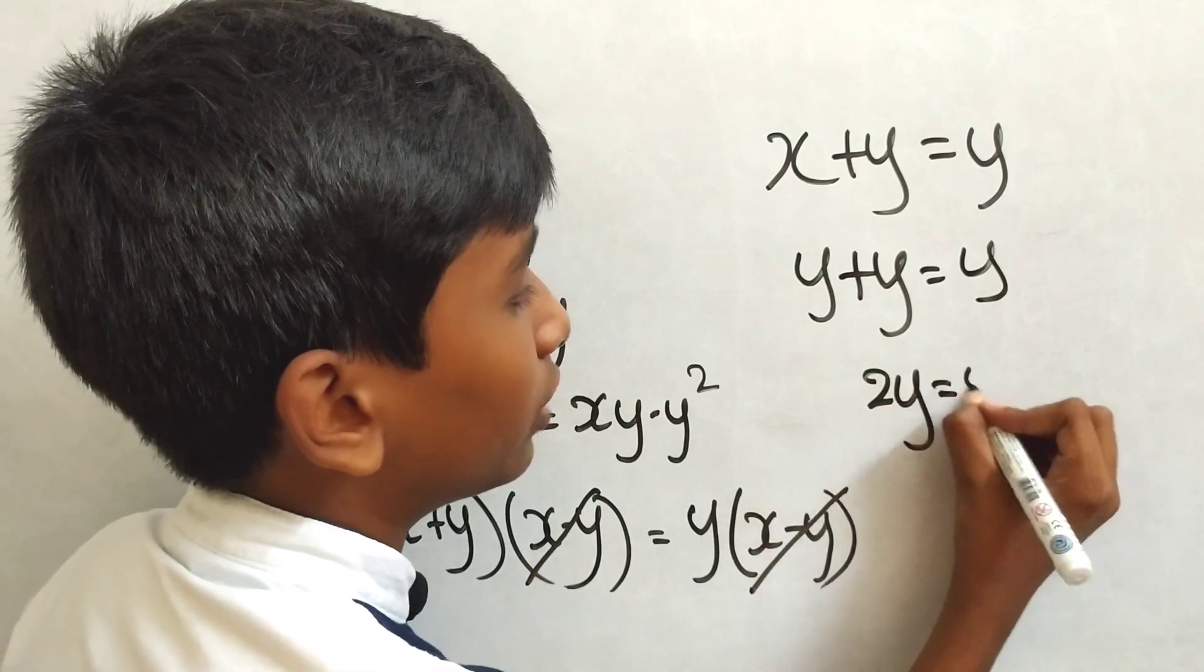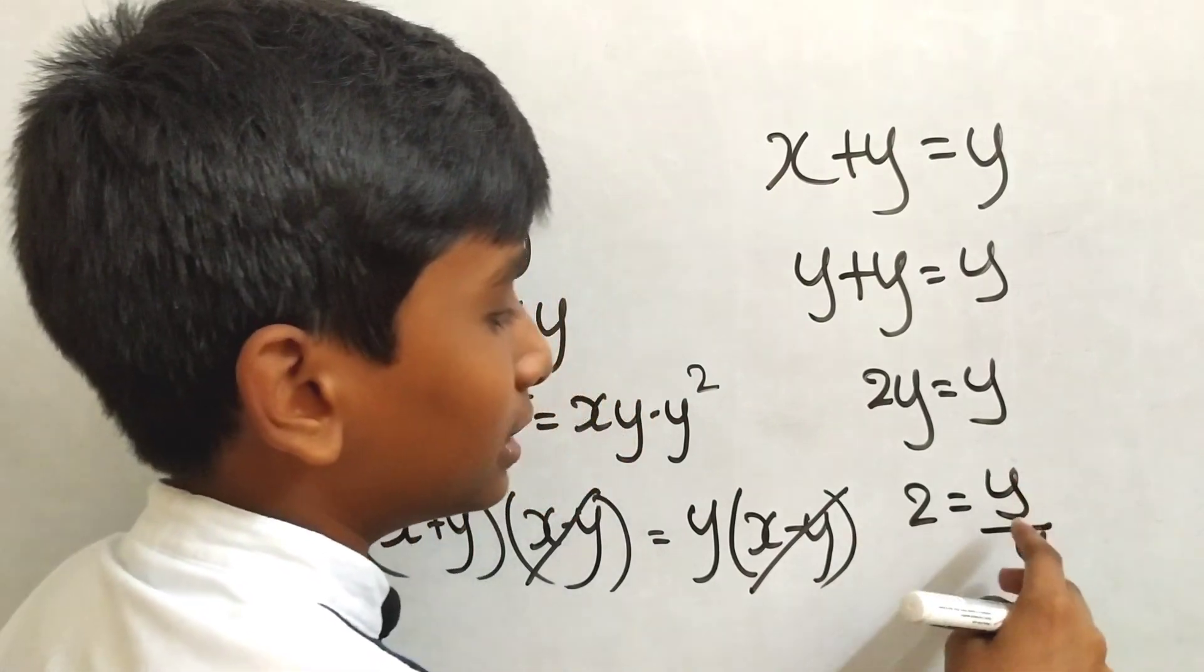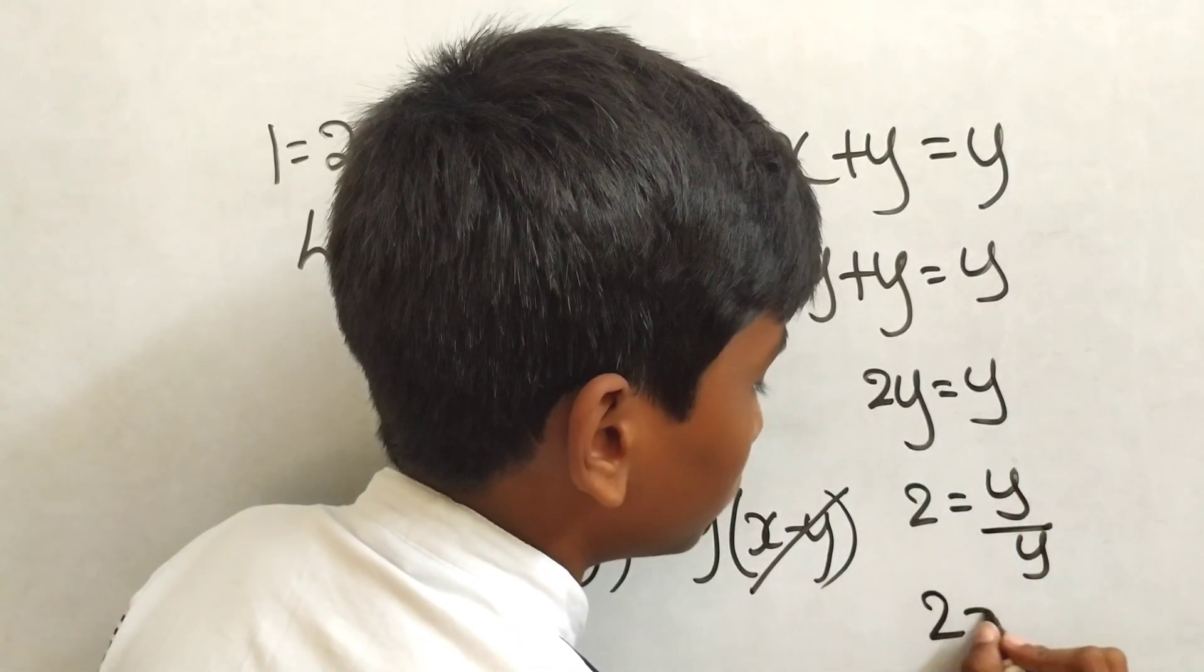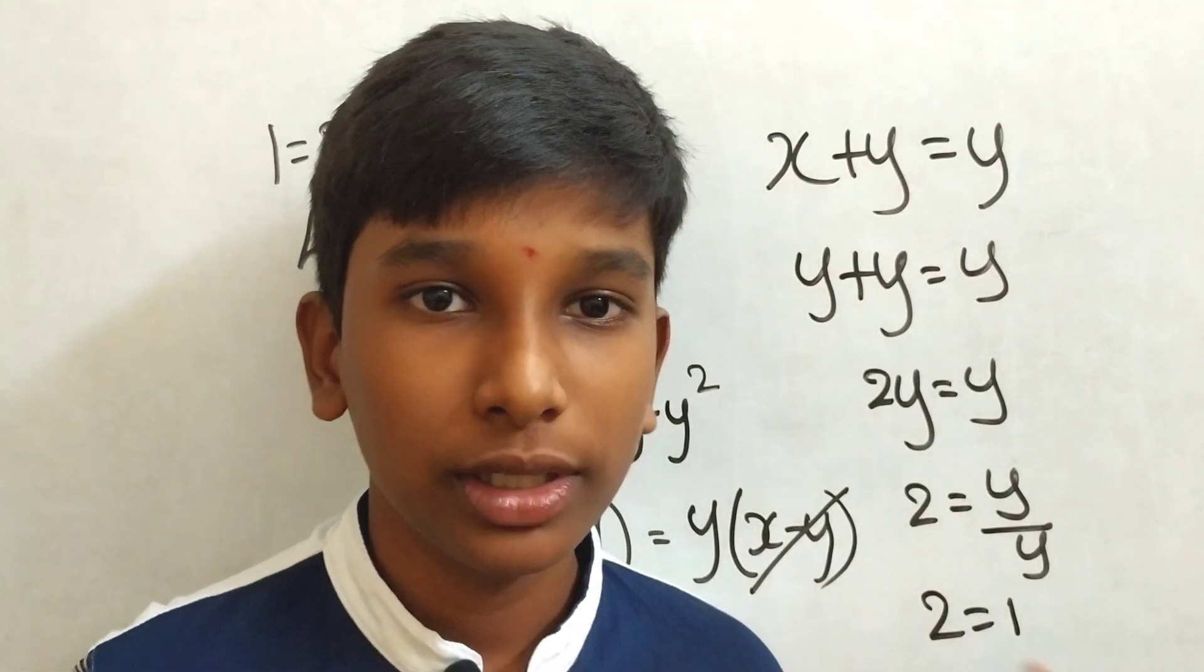2y equals y. 2 equals y divided by y. The y's cancel. Then 2 equals 1. Hence, 1 equals 2 is proved. Thanks for watching.